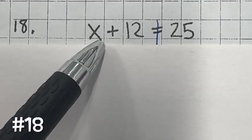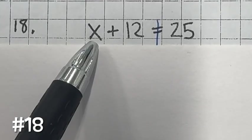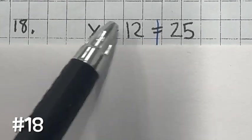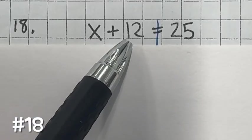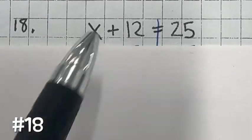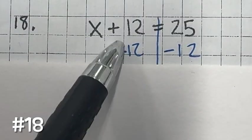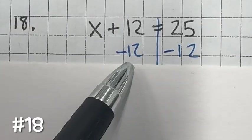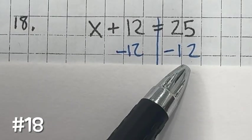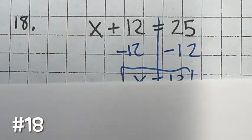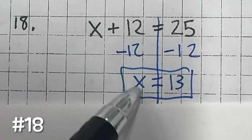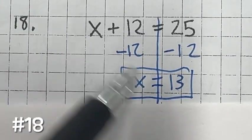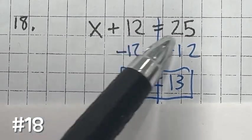Number 18: solve this equation to find the value of x. Use inverse properties to isolate the variable. The inverse of addition is subtraction, so subtract 12 from both sides. This creates a zero pair since 12 minus 12 is zero. Then 25 minus 12 equals 13. Check: if x is 13, then 13 plus 12 does equal 25.